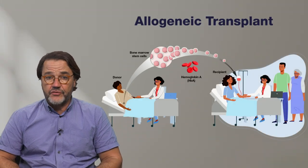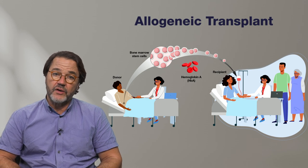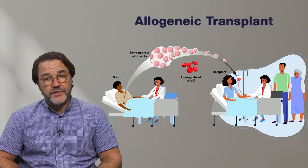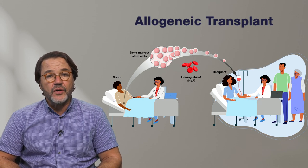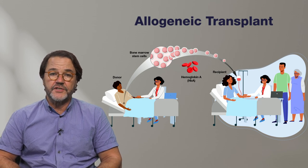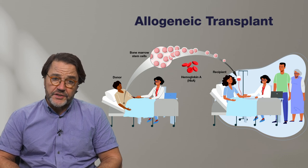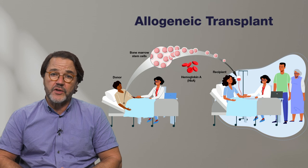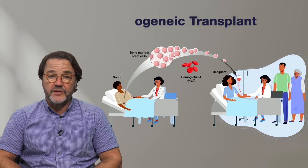In allogeneic transplantation, meaning from someone else, stem cells from another person are used. These stem cells do not code for sickle cell disease. In those with sickle cell disease, it can be hard to find someone who is a full match, meaning that their stem cells could be used in a transplant.